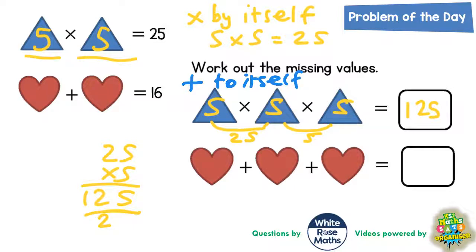Well 1 add 1 is 2, 2 add 2 is 4, 3 add 3 is 6, 4 add 4 is 8, 5 add 5 is 10, 6 add 6 is 12, 7 add 7 is 14, 8 add 8 is 16. So it's 8 add 8 to get 16.